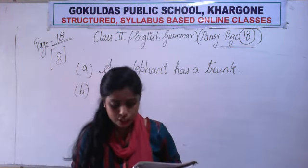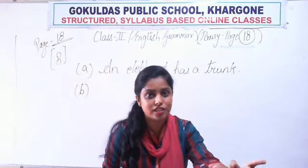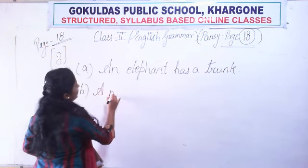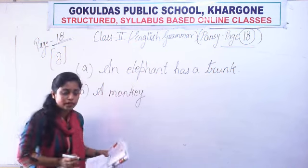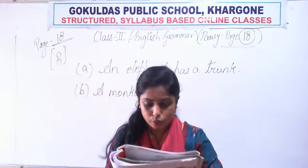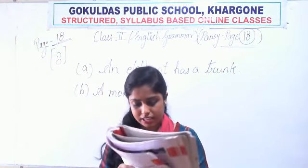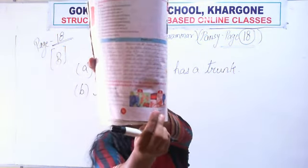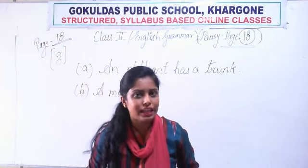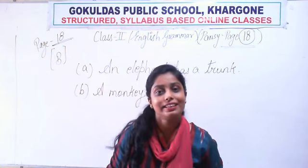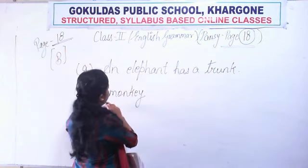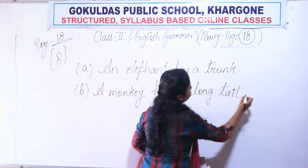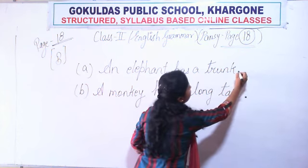Then number B — just behind the elephant there is a monkey. A monkey is given there. So let's write 'a monkey' as the subject. Now in picture box number B, what can we see that is relating with the monkey? Can you see a long tail here? Yes — there it is, a long tail. Does a monkey have a long tail? Yes! So we will write that as the predicate: A monkey has a long tail. Don't forget to put the full stop.